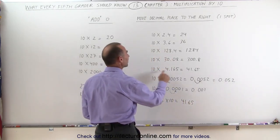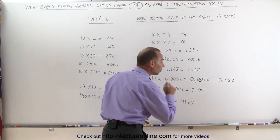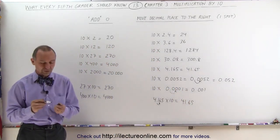So it doesn't matter if you write 10 times 4.165 or 4.165 times 10, you simply move the decimal place over one spot.